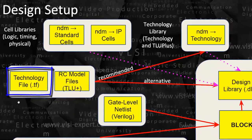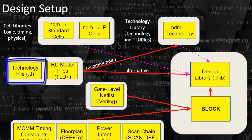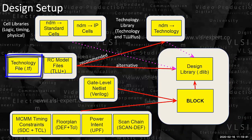Then there are technology files — .tf. If you are doing a design, that design has different metal layers. What are the expected widths? What is the pitch? All that information — spacing, minimum width — all the design rules associated are in the technology file.